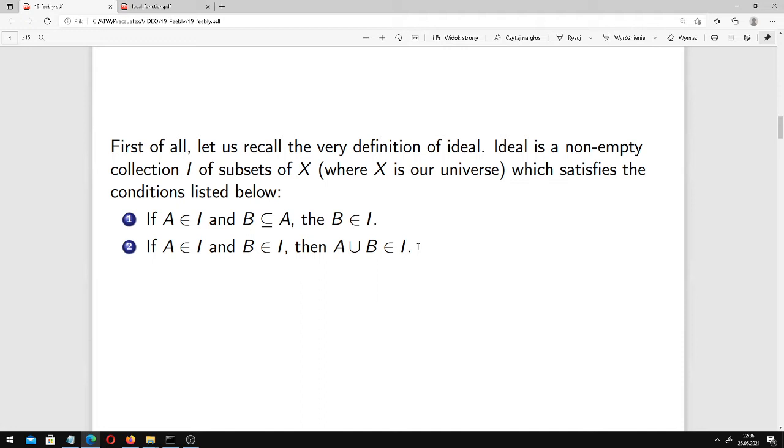We know that there is also a dual notion of filter. In case of filters, subsets are replaced by supersets, and instead of union we have intersection. Finite unions and finite intersections. Finite unions in case of ideals.